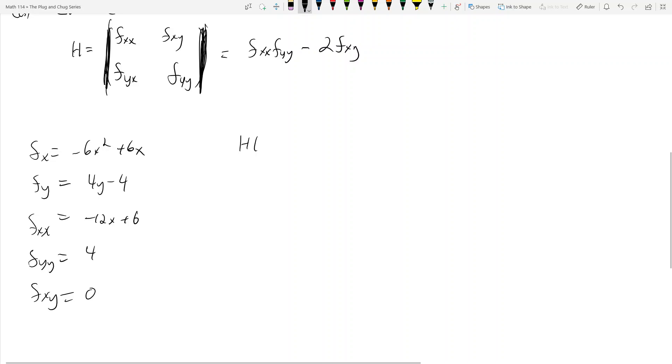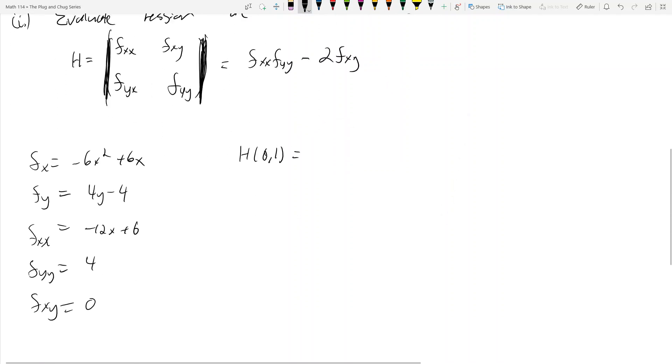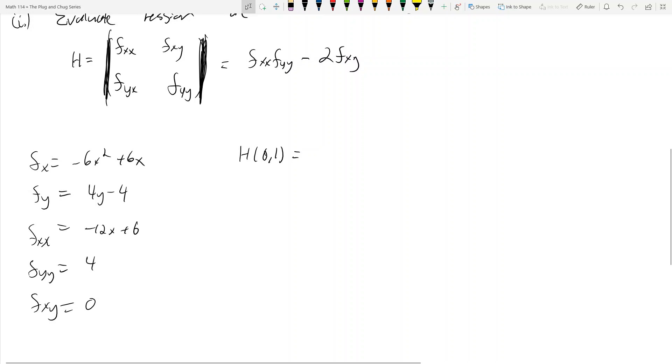And then the Hessian at 0, 1 is going to be f sub xx at 0, 1, which is positive 6. f sub yy at 0, 1 is still 4. And f sub xy equals 0. So Hessian at 0, 1 equals 24.